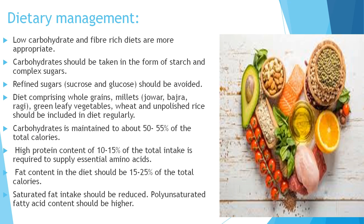Regarding dietary management, the person with diabetes mellitus should take low carbohydrate, fiber-rich food. Carbohydrates should be taken in the form of starch and complex sugars only, avoiding sucrose and glucose. Diet must comprise whole grains, millets like jowar, bajra, ragi, green leafy vegetables, wheat and unpolished rice.